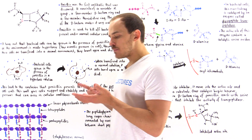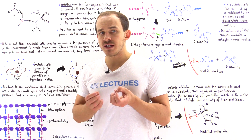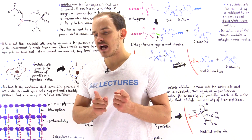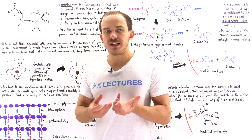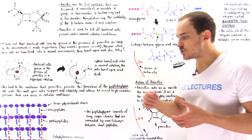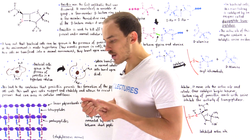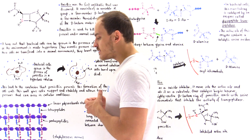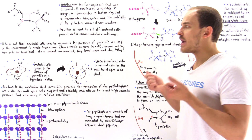Recall from biology that peptidoglycan cell walls give the bacterial cell the ability to resist a high osmotic pressure. It's because of that peptidoglycan cell wall that once bacterial cells enter our body, they don't actually immediately lyse. What we want to focus on in this lecture is the structure of penicillin and the actual mechanism by which penicillin acts on that bacterial enzyme.